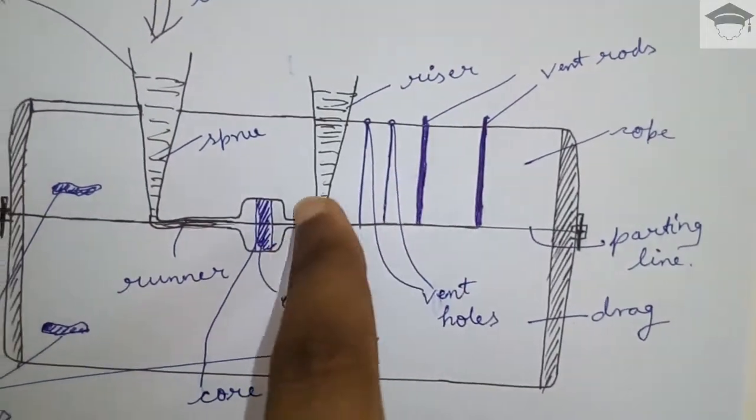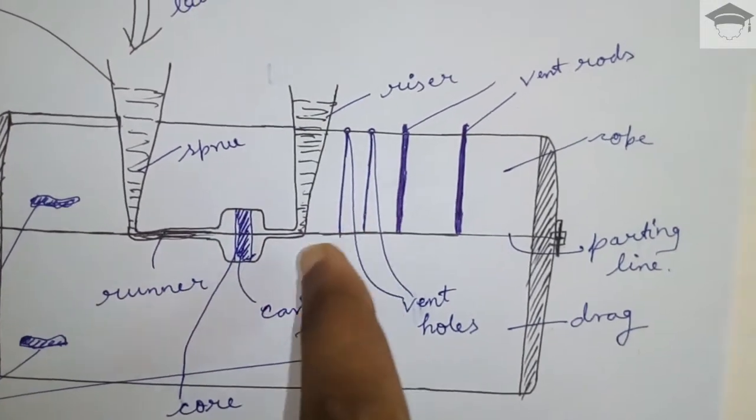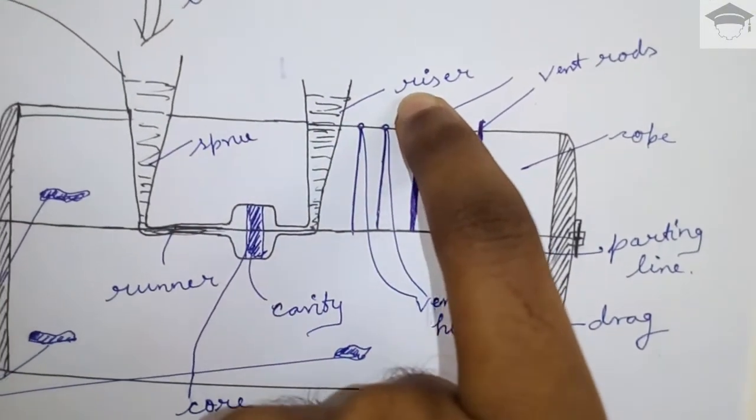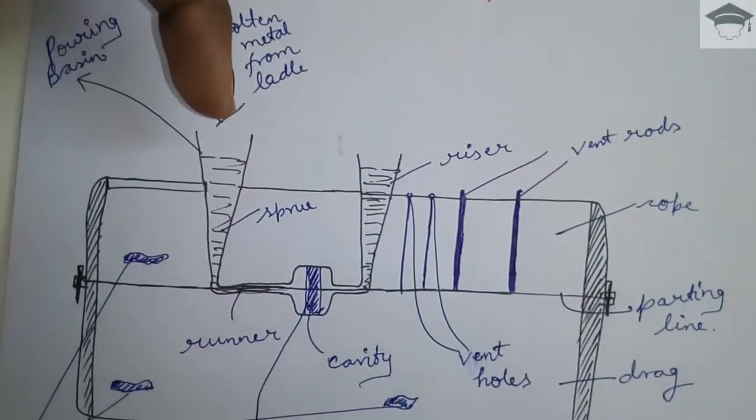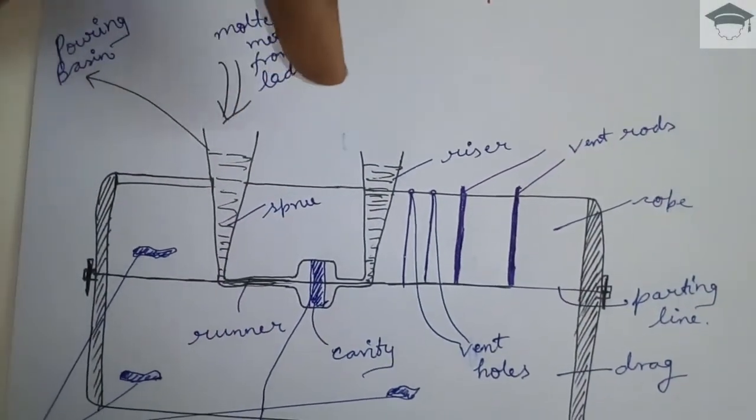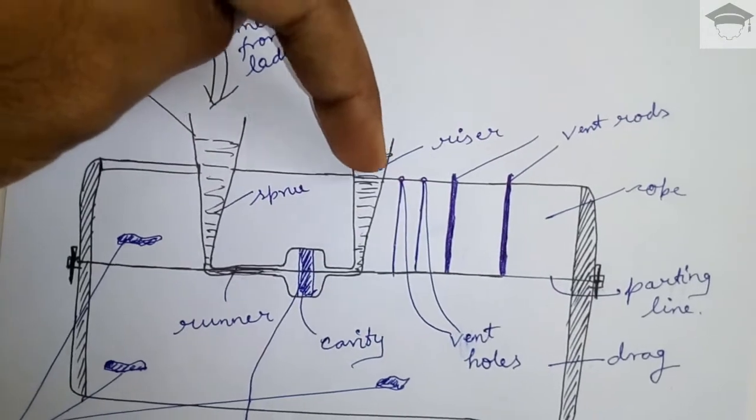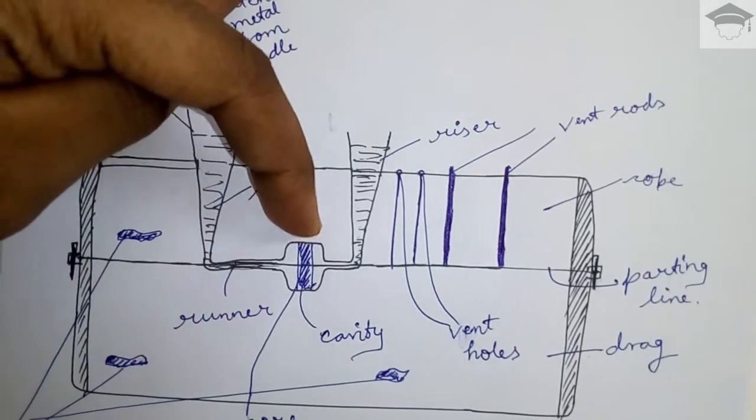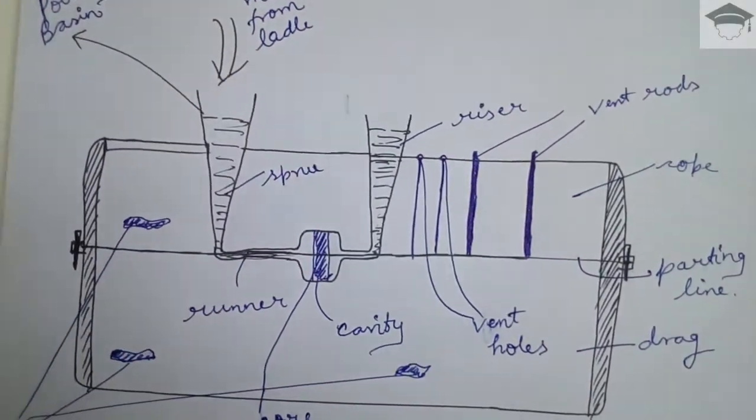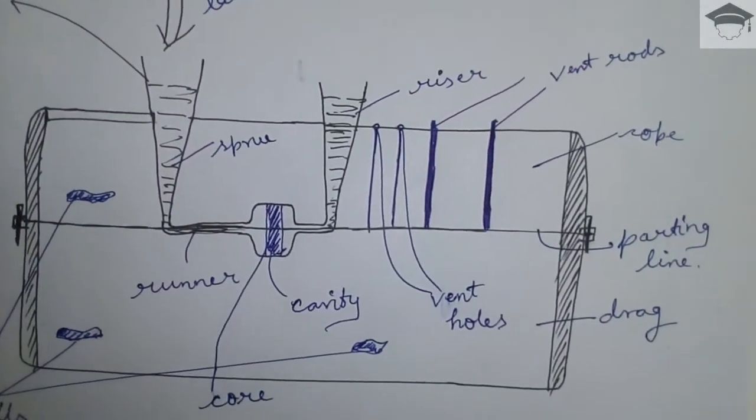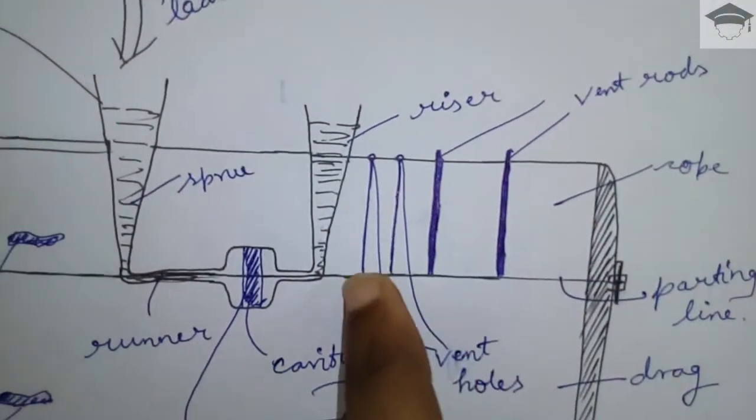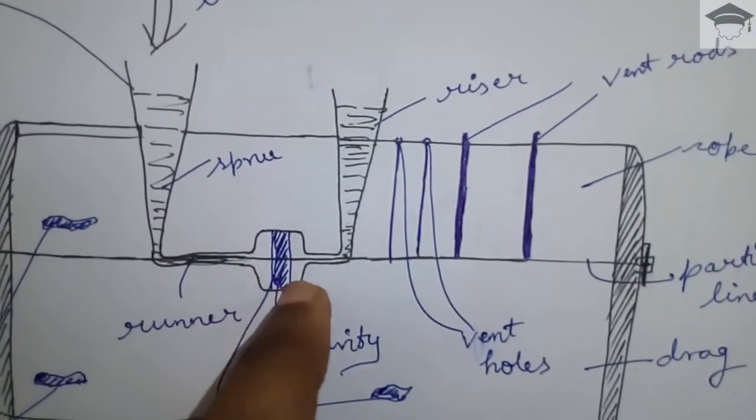After that in order to ensure that the cavity is completely filled or not we provide extra opening - it is known as riser. So that when we pour the molten metal from here and we see that molten metal is coming out from the riser, till then we fill the cavity in order to ensure that the cavity is completely filled. And also the riser works to compensate when the shrinkage occurs.